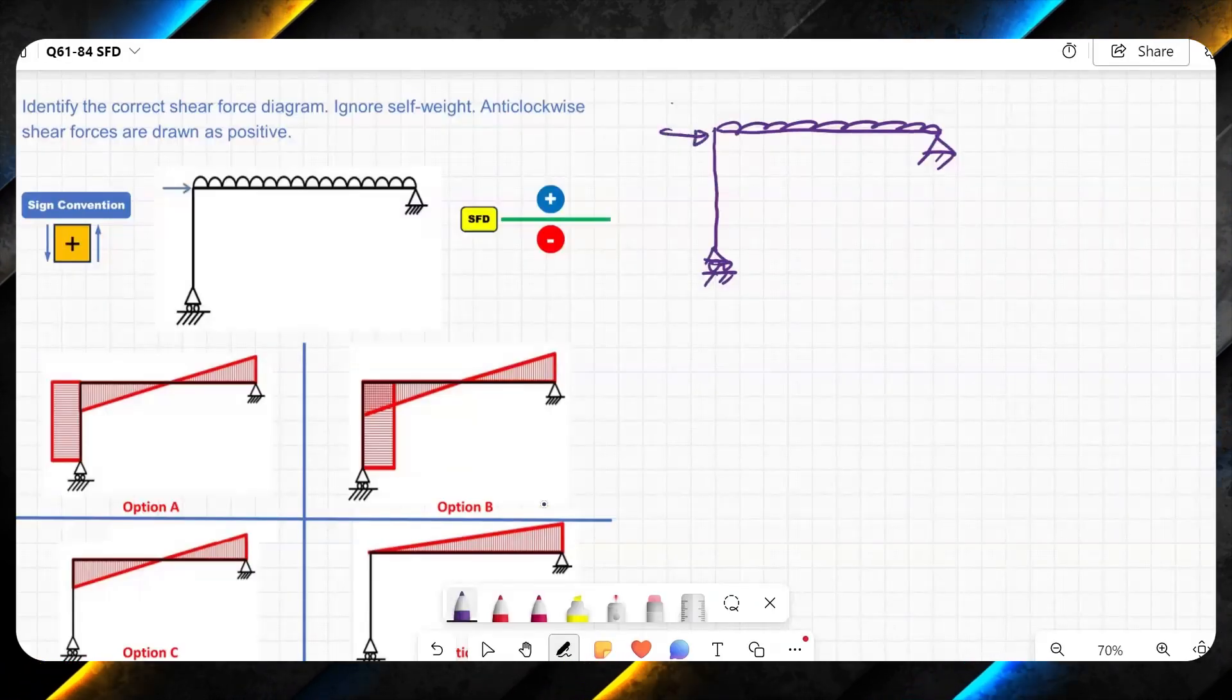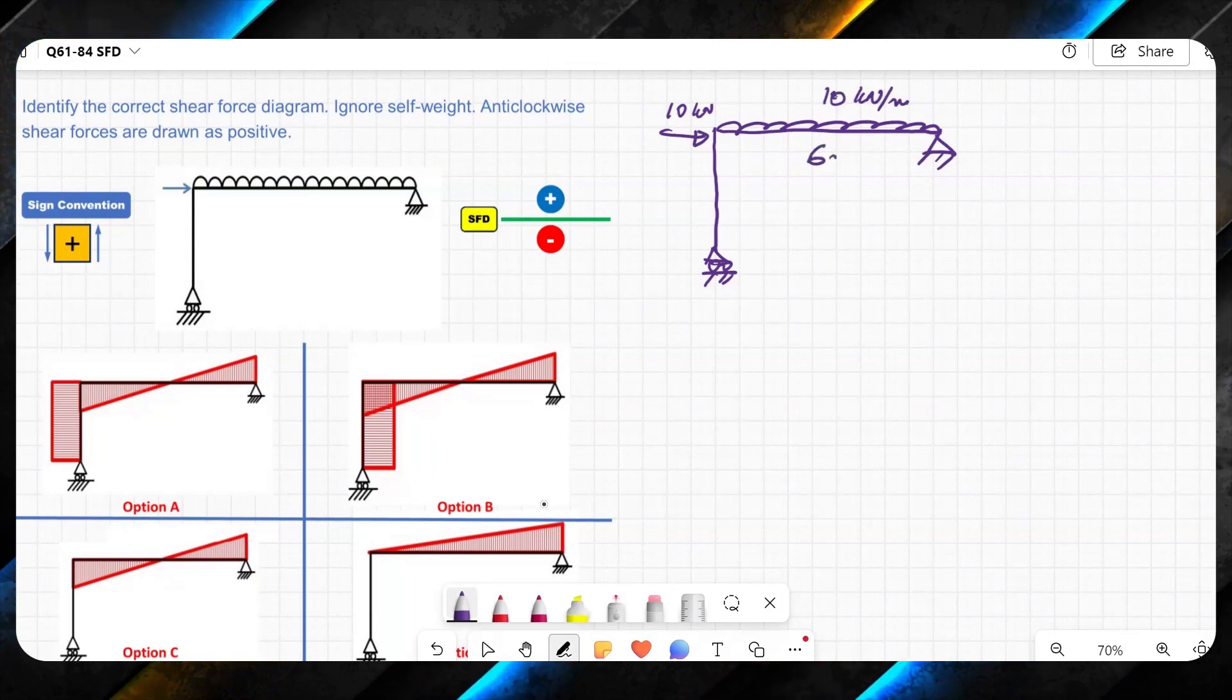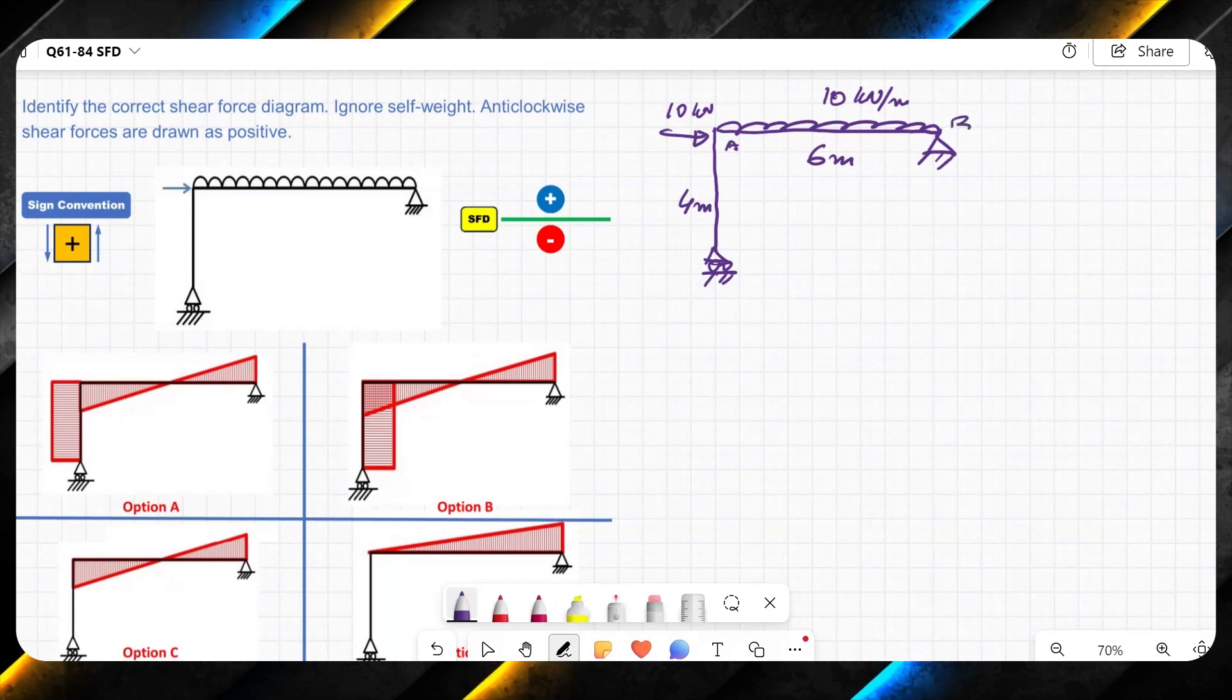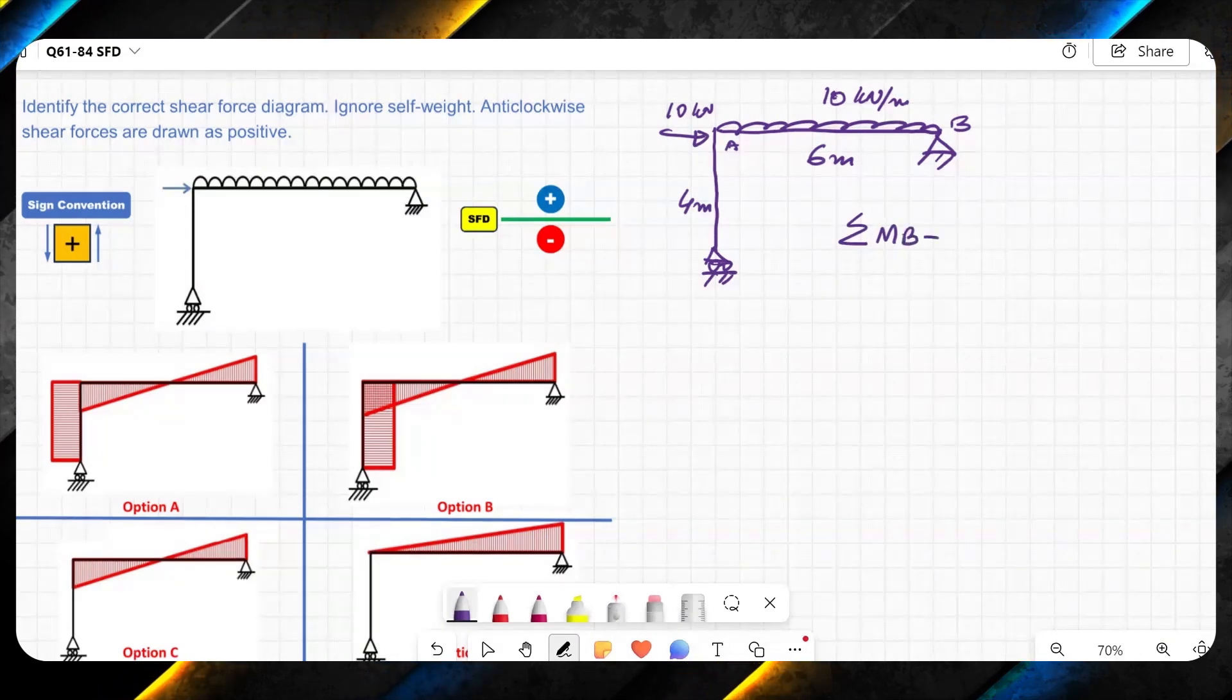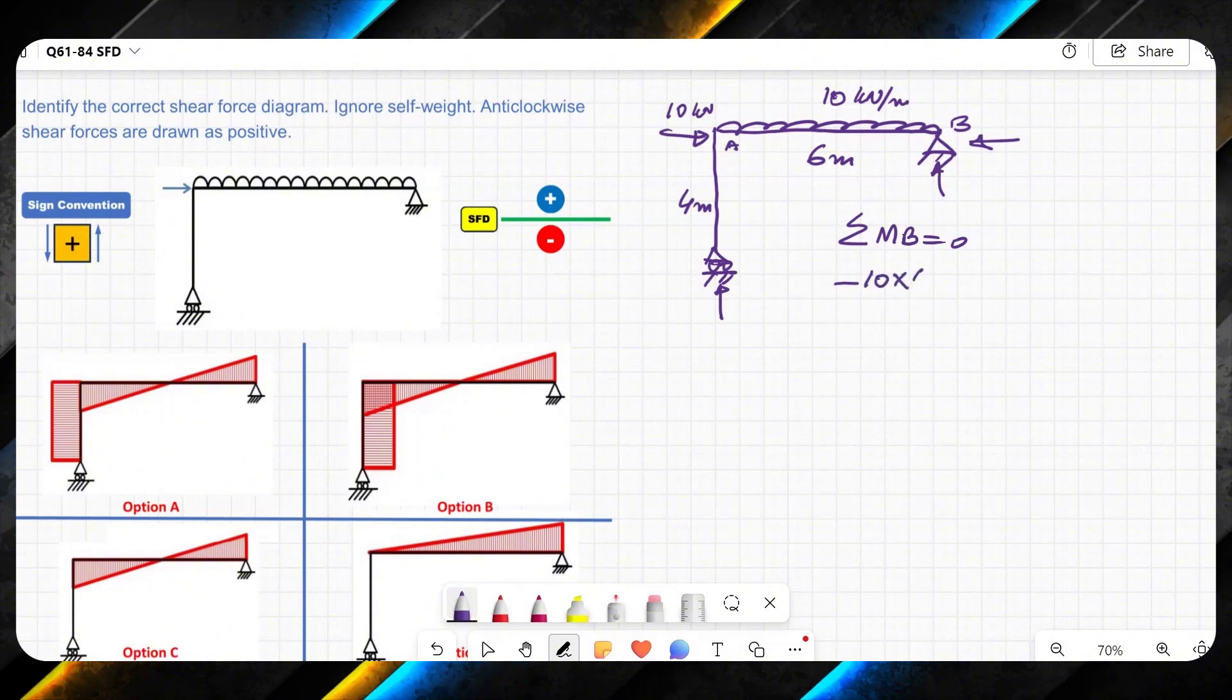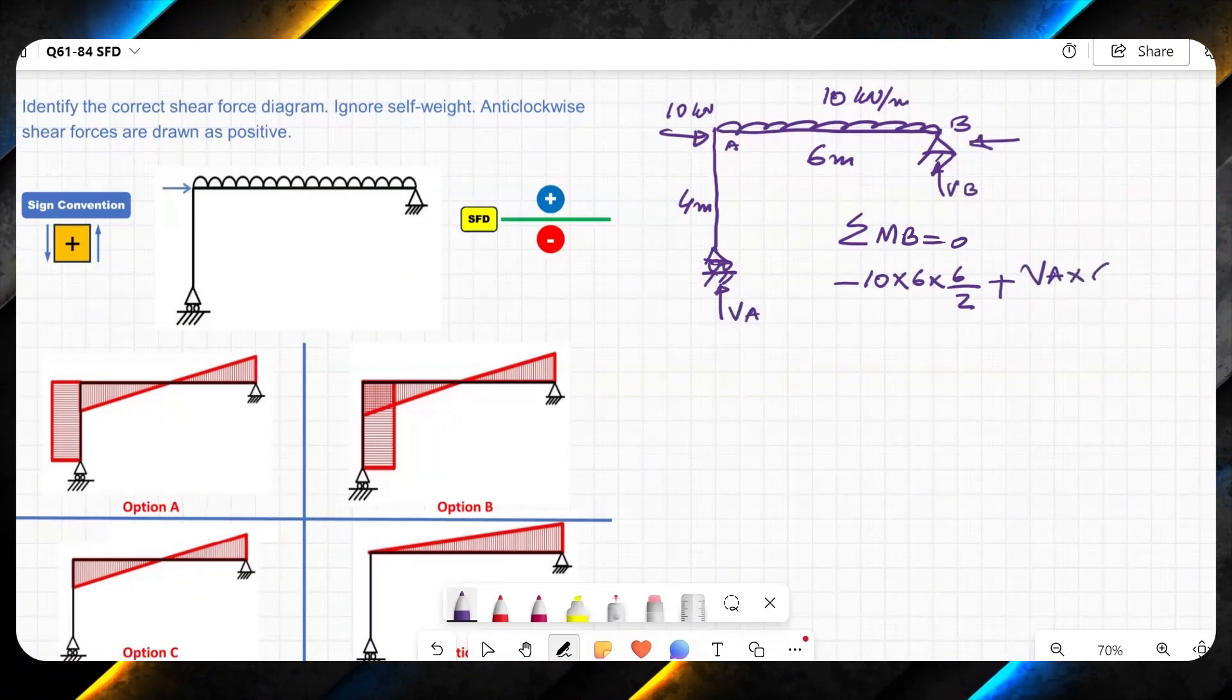Let us assume we have 10 kN over here. And we have 10 kN per meter. And say that this is 6 meters. And say that this is 4 meters. And I call this point as A. And I call this point as B. The summation of moment at B is equal to zero. There will be reaction over here. There will be reaction over here. Due to UDL. It will be 10 times 6 times 6 over 2. Plus VA times 6. This is creating clockwise moment.